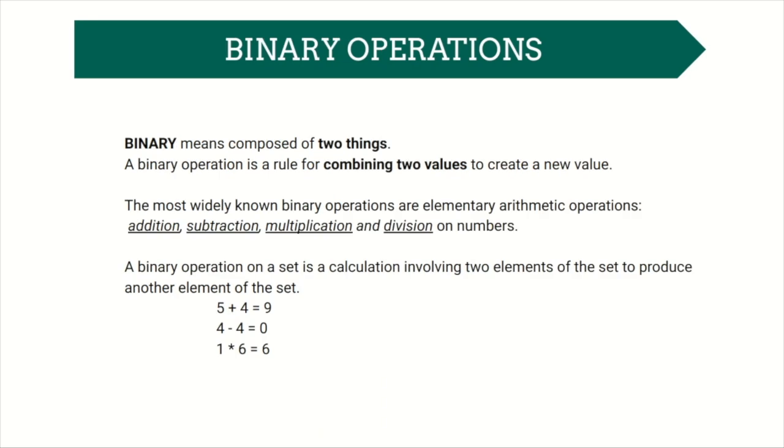The word binary means composed of two things. A binary operation is simply a rule for combining two values to create a new value. The most widely known binary operations are those learned in elementary school: addition, subtraction, multiplication, and division on numbers. Technically, a binary operation on a set is a calculation involving two elements of the set to produce another element of the set.